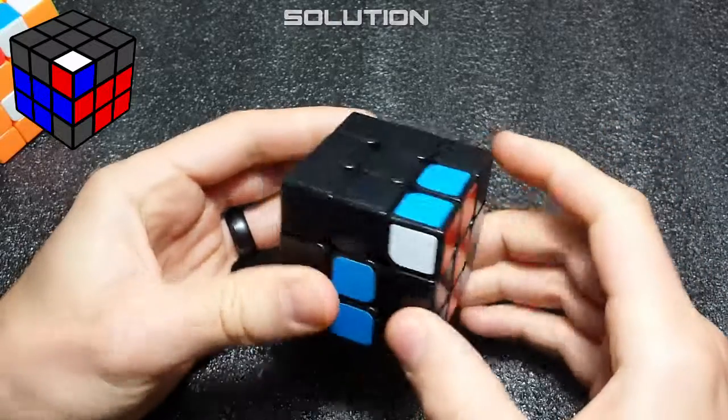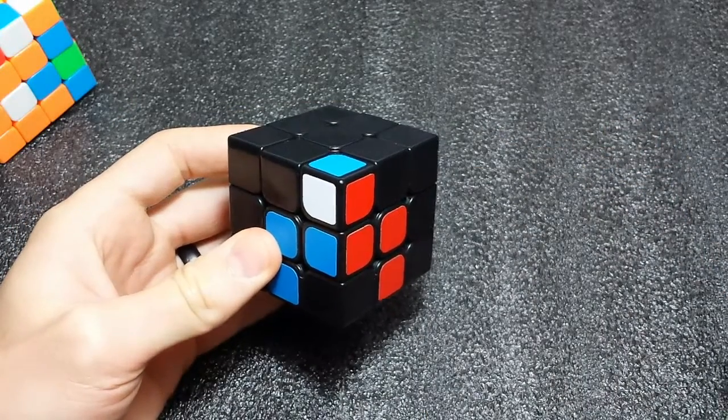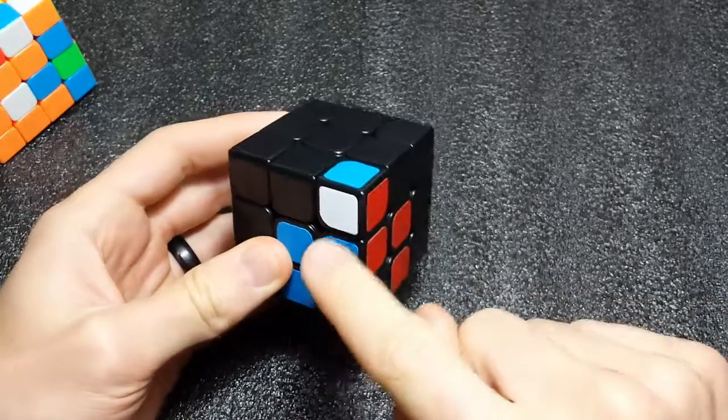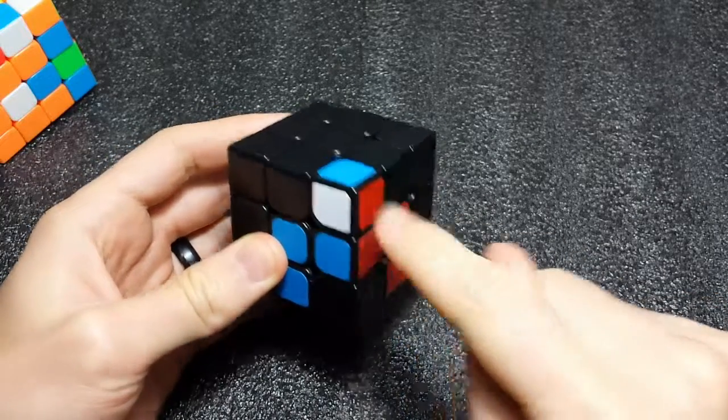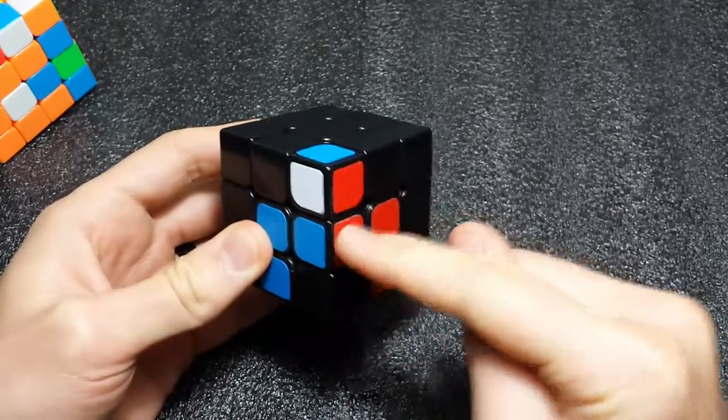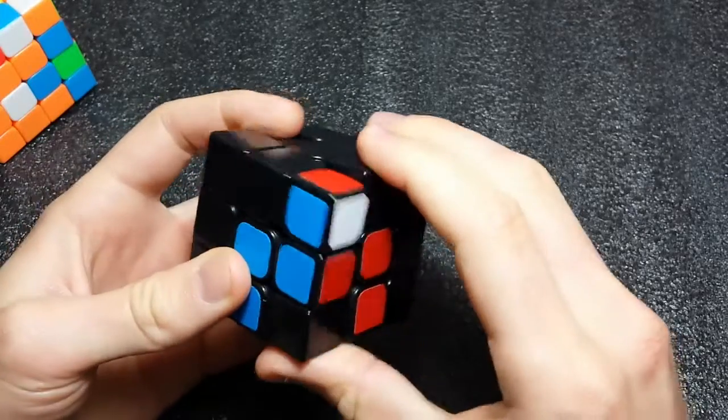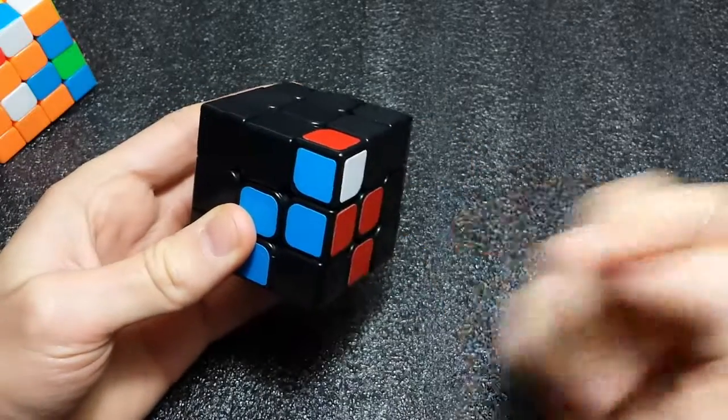The next case we're going to do is case number 33 and number 34 from the speed solving wiki. That's this case where you have the corner piece on top of your edge piece and two of them are the same color on the same side. The inverse of that is this.